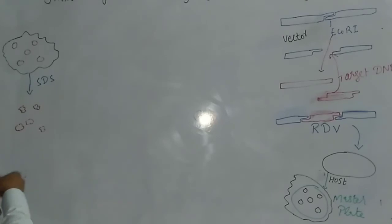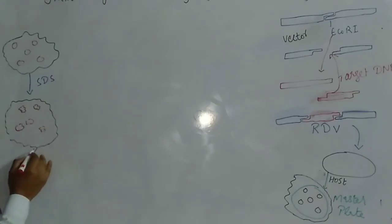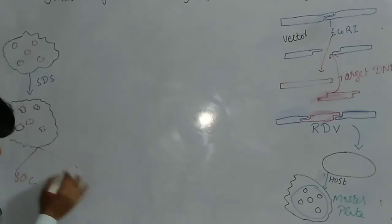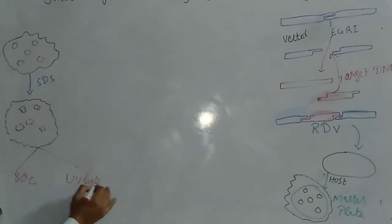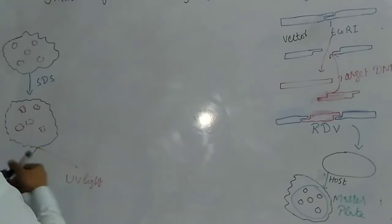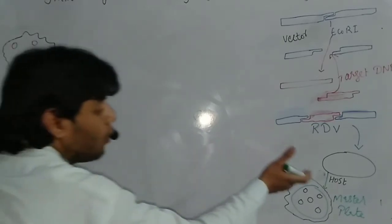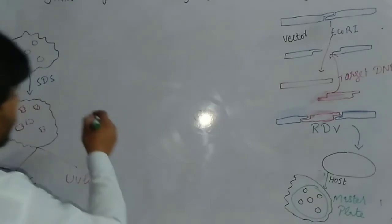All the bacterial cells become ruptured. After that, we put the nylon filter paper on a solid surface at 80°C or expose it under UV light to fix the colonies. Once the colonies are fixed, we load the primary antibody onto the nylon filter paper.